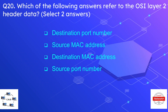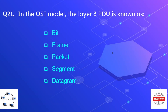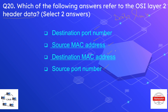Question number twenty is: which of the following refers to the OSI layer two header data? The layer two is the data link layer. The options are destination port number, source MAC address, destination MAC address, and source port number. The correct options are source MAC address and destination MAC address. Source and destination port numbers both work at layer four, or the transport layer.